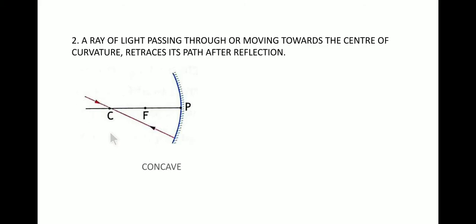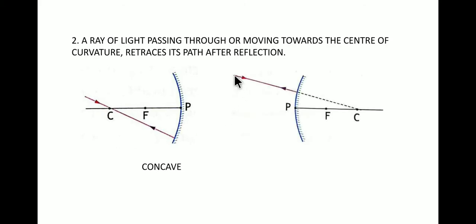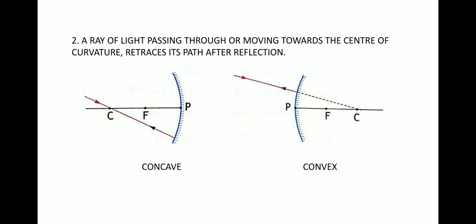For the convex mirror, the incident ray is moving towards the center of curvature. A ray moving towards the center of curvature does not actually reach it; instead it gets reflected at the surface and bounces back, retracing its original path. So a ray of light passing through or moving towards the center of curvature retraces its path after reflection — this is true for both concave and convex mirrors.